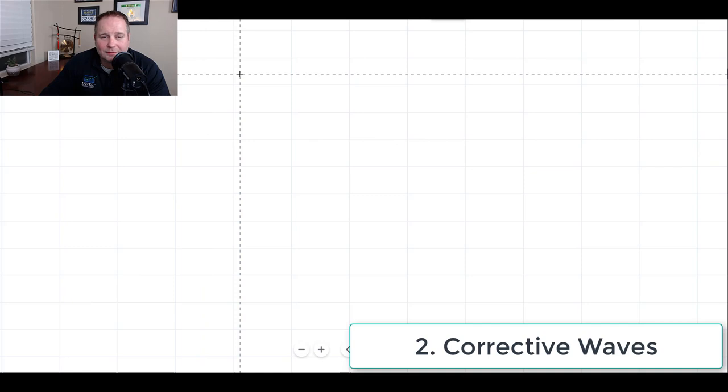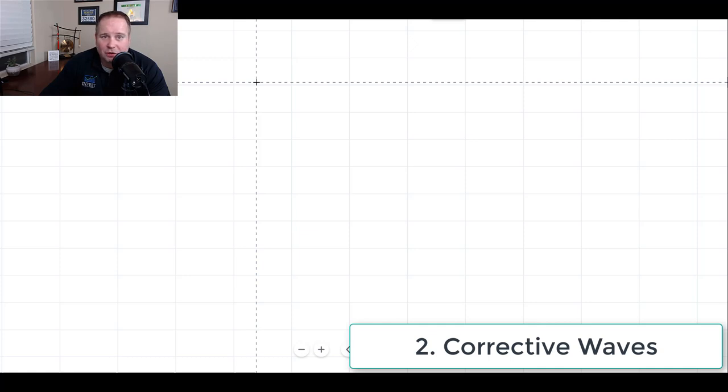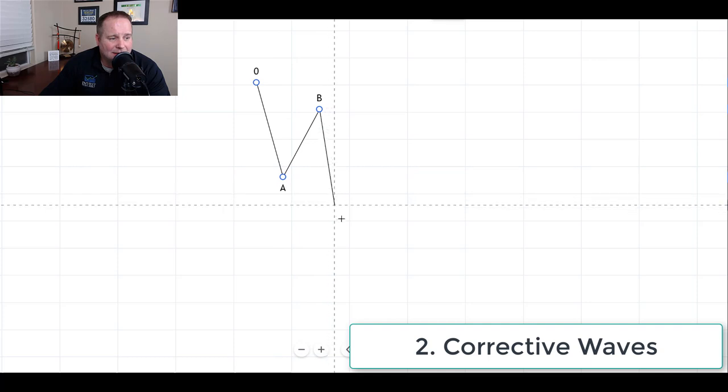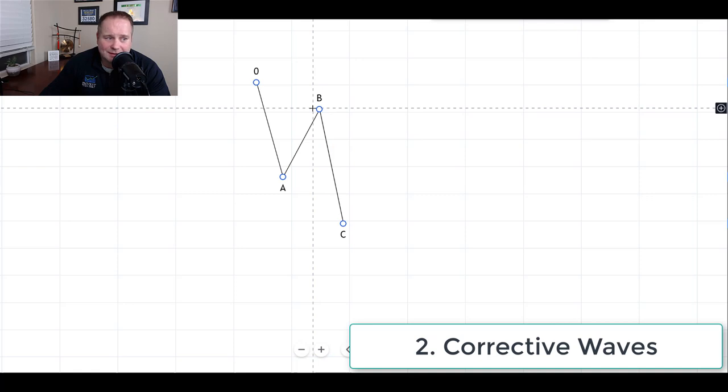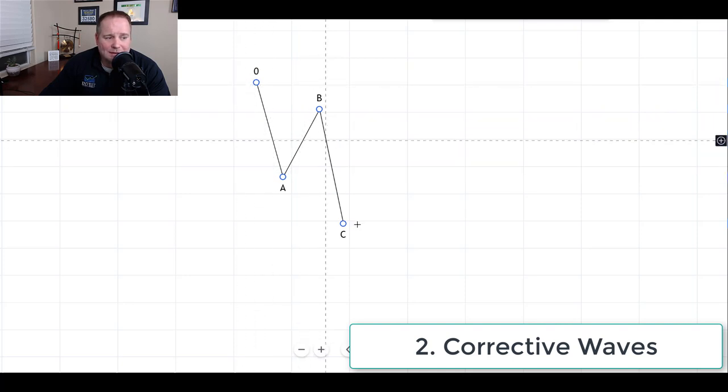Now corrective wave is a three wave structure that is counter trend to the market. So if those impulsive waves are going up, we would expect our corrective wave to go down. And you would see an A, B, C pattern. Corrective waves are labeled with letters instead of numbers, so we can identify them easier. And they are three wave patterns and not five wave patterns. So a corrective pattern is always going to be an A, B, C.